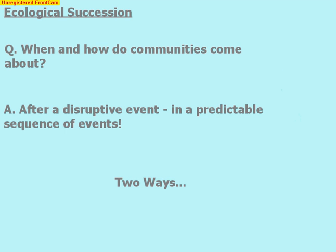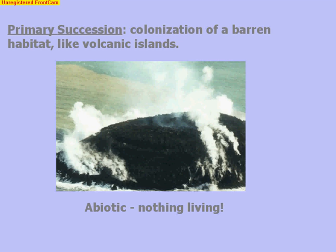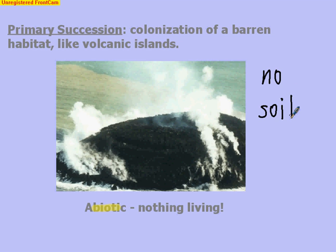The first is primary succession. Primary succession is predictable — we can predict the sequence of events in terms of building a community. Primary succession is the colonization of a barren habitat, for example the formation of volcanic islands. You've got molten material that solidifies to rock, and nothing living is present. The key here is abiotic initially — nothing living.